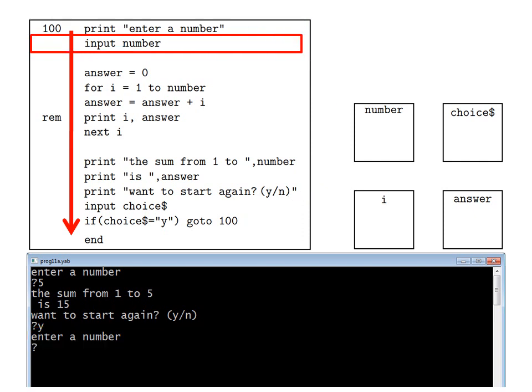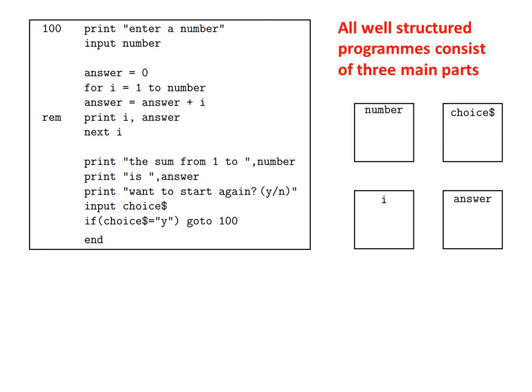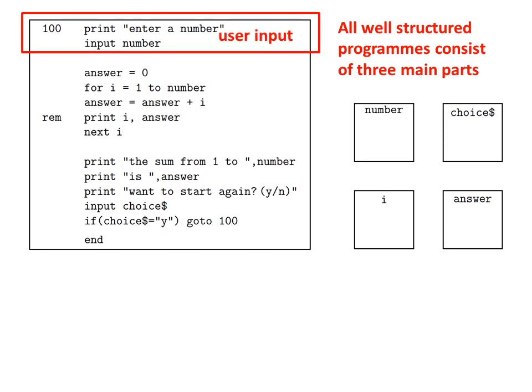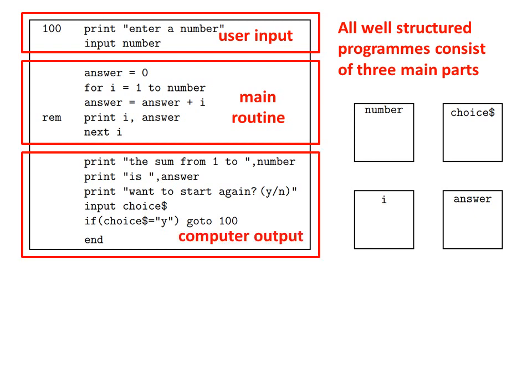Enter a number, input number, question mark, and so on. Now we have already learned something important, which is that all well-structured programs consist of three main parts. First, there is the user input, where the human tells the computer what computation to do. Then there is the main routine, the middle part of the program, where the computer actually performs the requested computation. And finally there is the computer output, where the computer tells the human what the answer to the computation is.